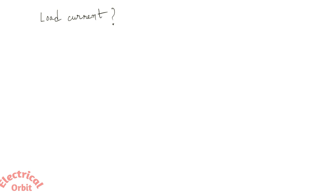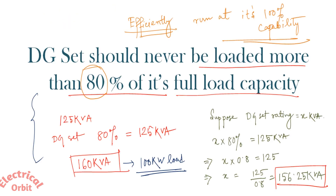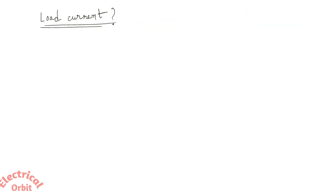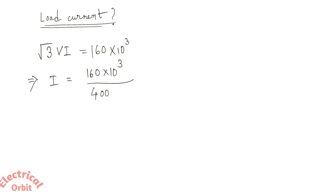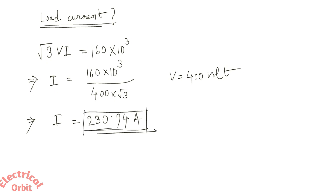Another question is: what about the load current of the DG set? Sometimes the load current capability needs to be determined. Since the total power is 160 KVA and this is a three-phase system, using the formula: KVA = √3 × V × I, we get I = 160,000 ÷ (√3 × 400) = 230.94 amperes.